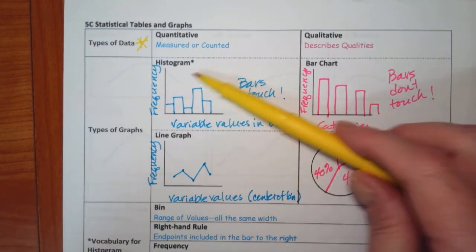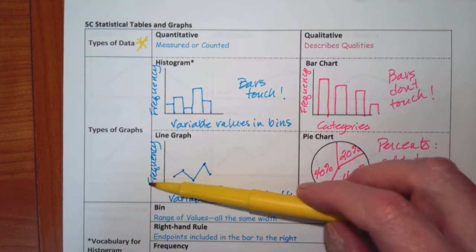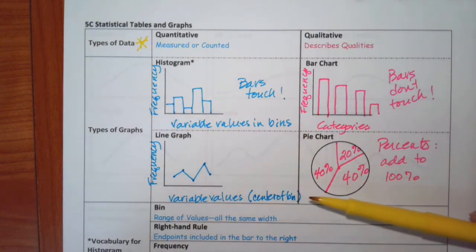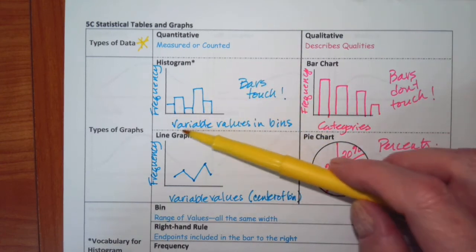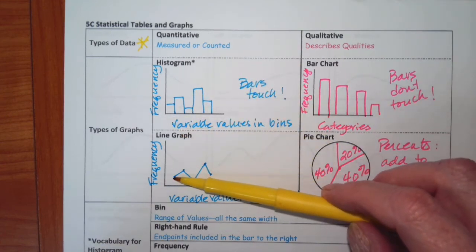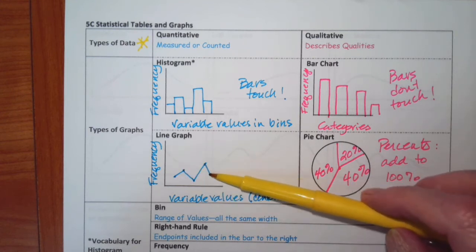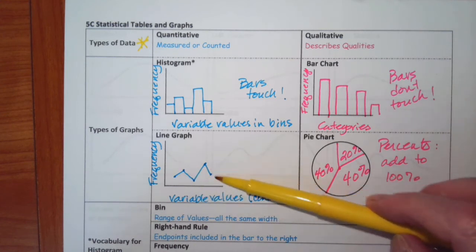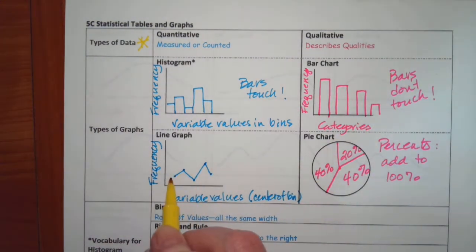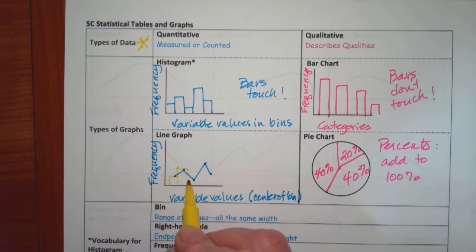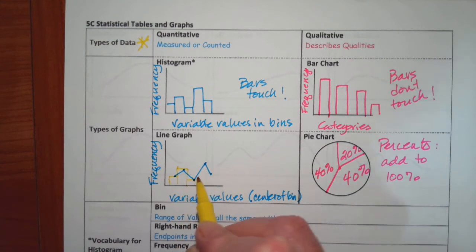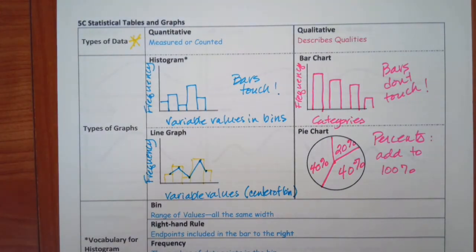Then a line graph is identical to this where you have your variable values and your frequency. And what you do when you're looking at here is you take the center of your bin and put a dot. Then a dot, another dot, another dot, another dot, and connect your dots with lines. So that if you were to draw in your bins here, it would be the same as what you see above.